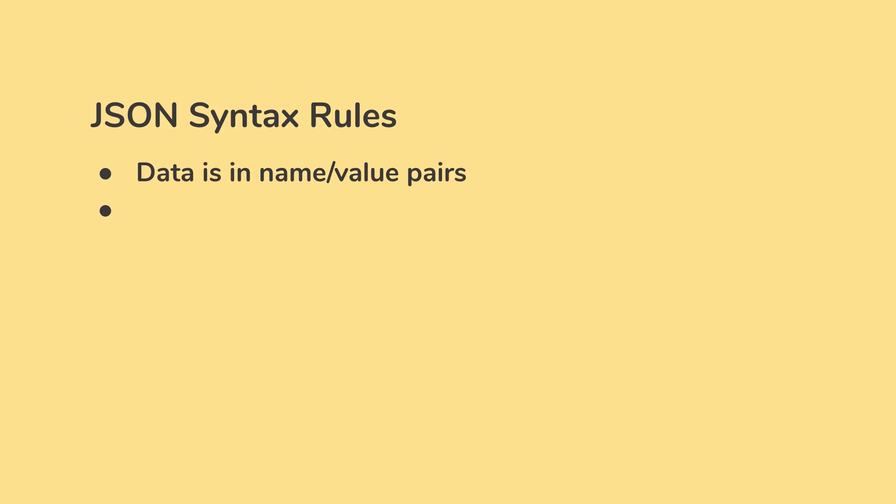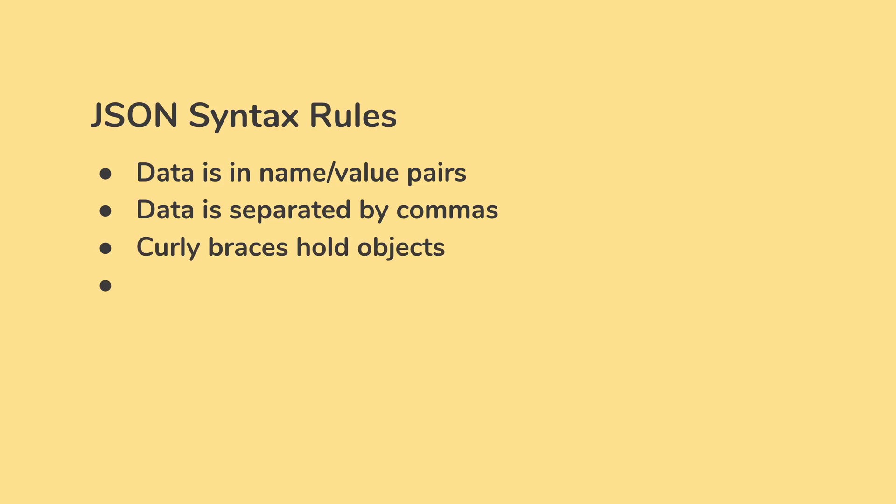The simple rules for creating JSON: data is in name-value pairs, data is separated by commas, curly braces hold objects, and square brackets hold arrays. These are the basic rules for creating a JSON message.